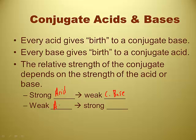A weak acid, on the other hand, is going to give birth to a strong conjugate base. And if we're talking about strong bases, they're going to give birth to a weak conjugate acid. Weak bases give birth to strong conjugate acids.